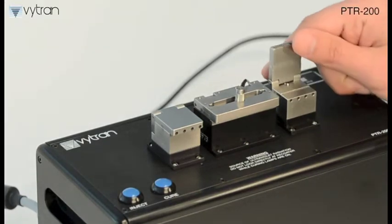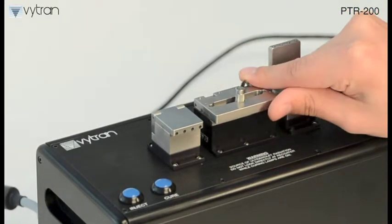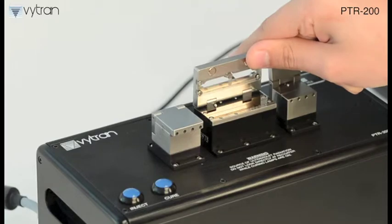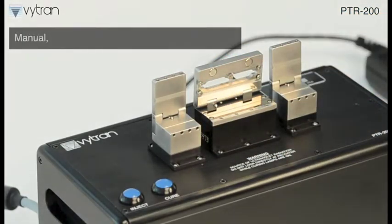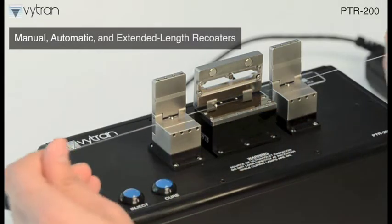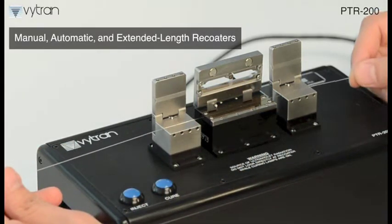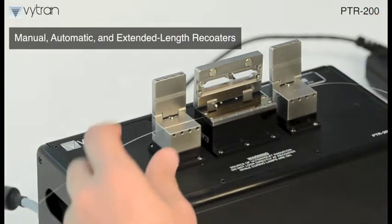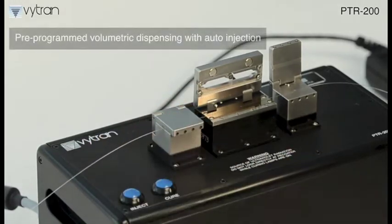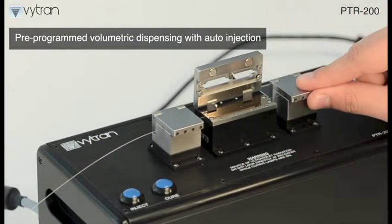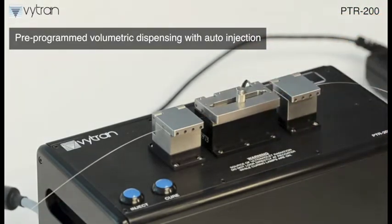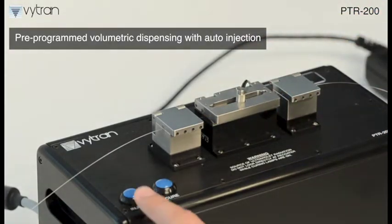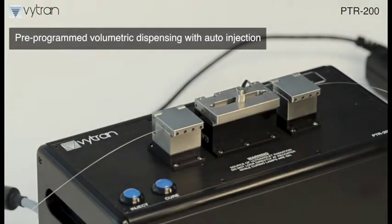Vytran's PTR-200 series offers a host of features to facilitate high performance recoating and ensure fiber strength and reliability. We offer manual, automatic, and extended length recoaters to cover a wide range of applications, from R&D to production. Our recoaters feature pre-programmed volumetric dispensing with auto injection for automated, high volume operation. A manual inject option is also available for most recoaters.